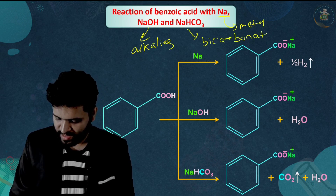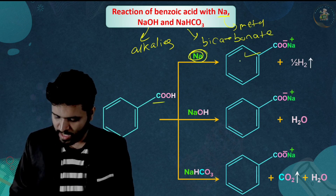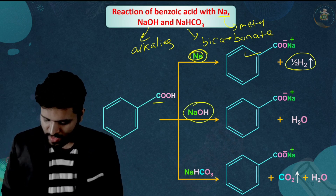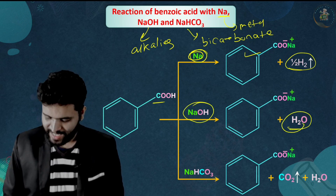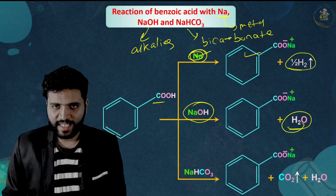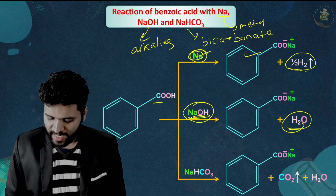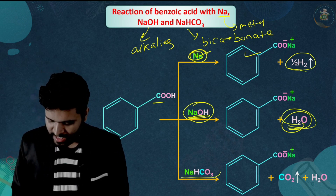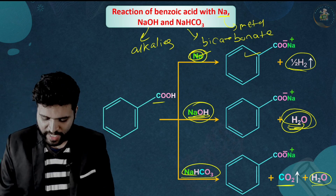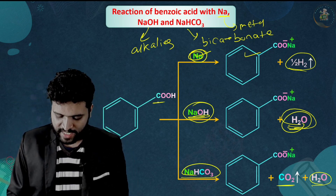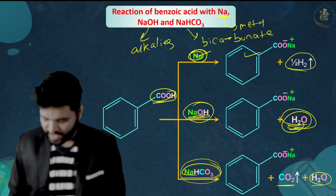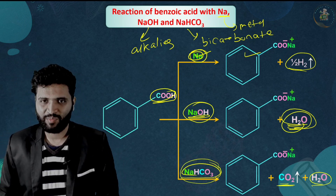Summary of reactions: carboxylic acid reacting with carbonate or bicarbonate gives the salt of carboxylic acid, water, and CO2. Reaction with active metals gives the salt and liberates H2 gas. Reaction with alcohols gives a salt and H2O. Reaction with NaHCO3 (bicarbonate) gives the salt, H2O, and CO2 gas.